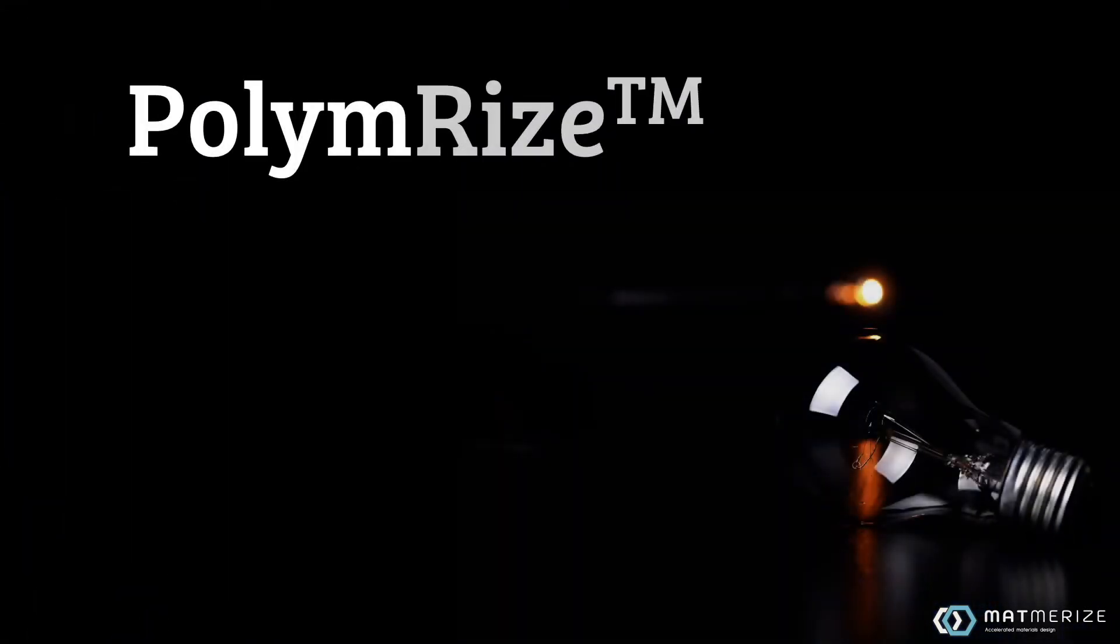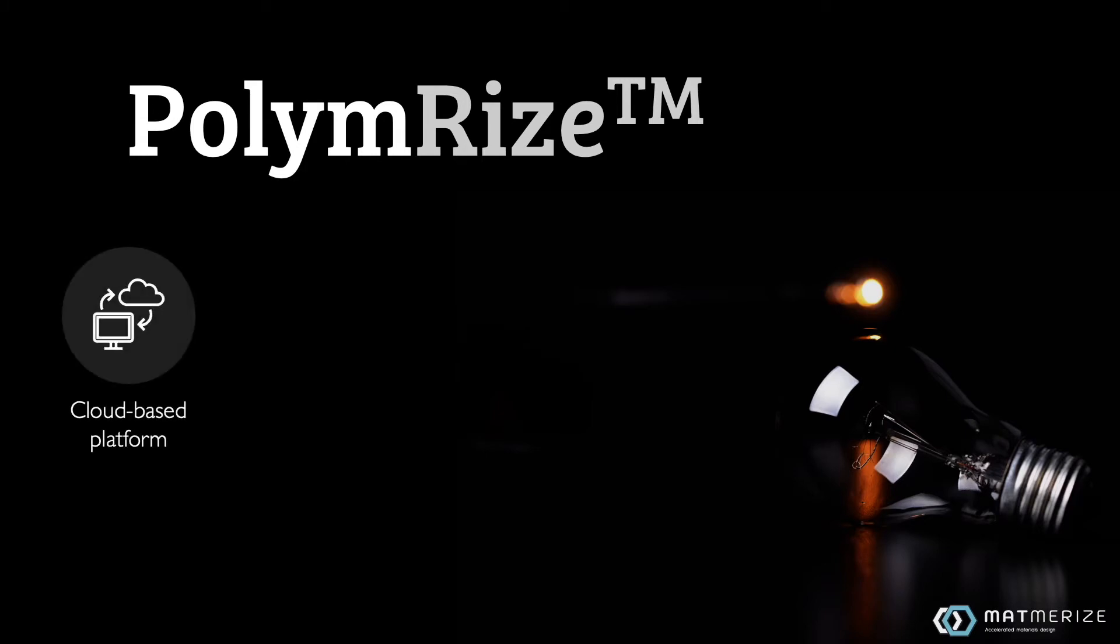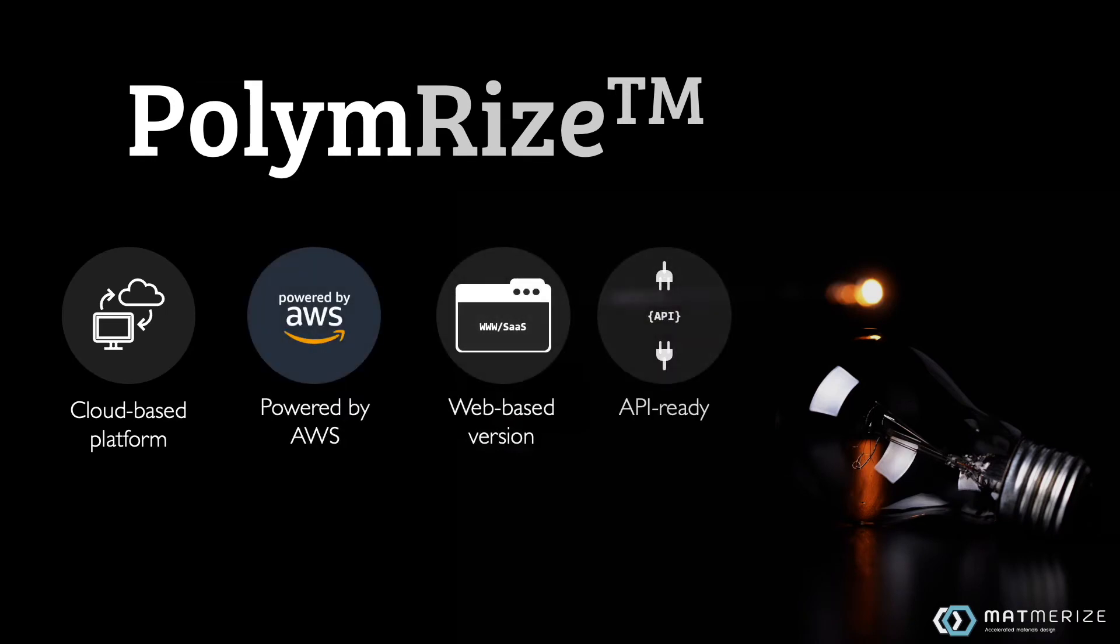Our property prediction and design capabilities are offered through our flagship product, Polymerize. Polymerize is a cloud-based software hosted on Amazon Web Services. The platform can be accessed through a web-based version or via API. Access to Polymerize is provided in a subscription-based model.